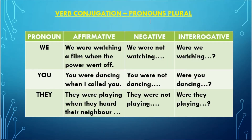For plural pronouns — we, you, and they — the structure uses 'were' + V1 + ING. Affirmative: 'We were watching a film. You were dancing. They were playing.' Negative: 'We weren't watching. You weren't dancing. They weren't playing.' Interrogative: 'Were we watching? Were you dancing? Were they playing?' So with plurals it is were + V1 + ING, and with singulars it is was + V1 + ING.